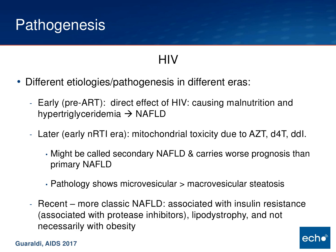More recently, now that we're not using these mitochondrially toxic agents any longer, maybe the risk factors and pathogenesis are like those in the general population — more associated with insulin resistance, which might be associated with protease inhibitors and lipodystrophy. One difference is that it's not really associated with obesity in HIV-infected patients the way it is in the general population. You could organize this in a temporal sequence, but all of these things might exist in some overlapping way at any one time.